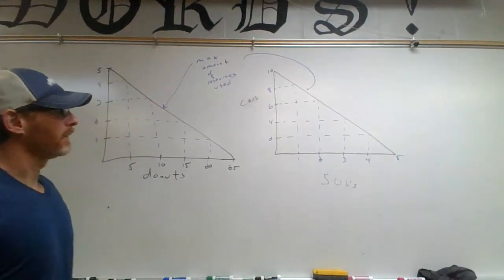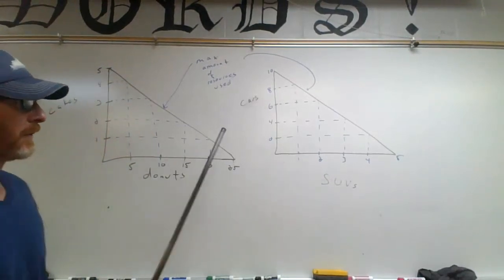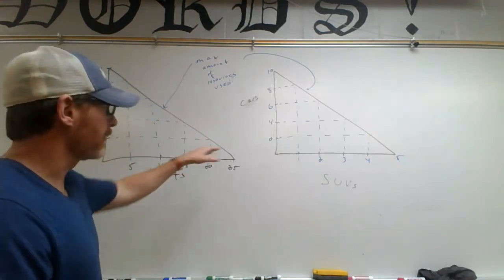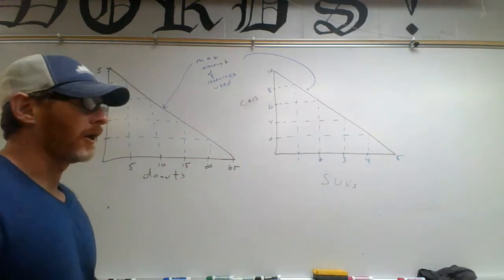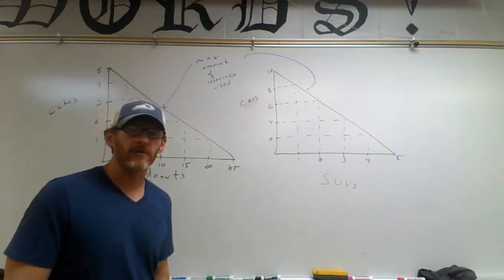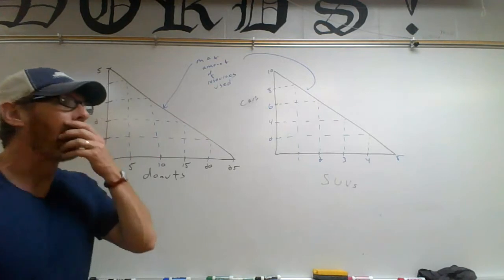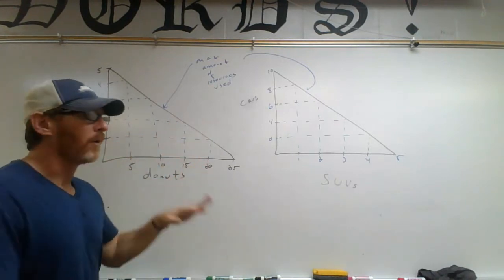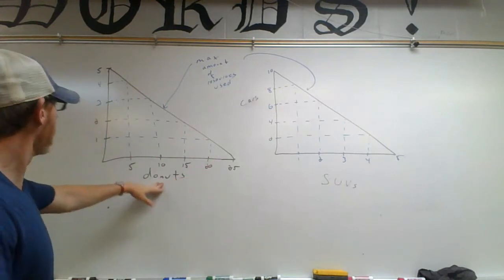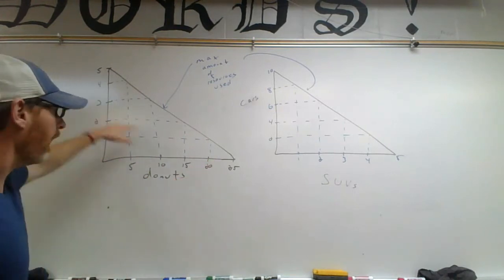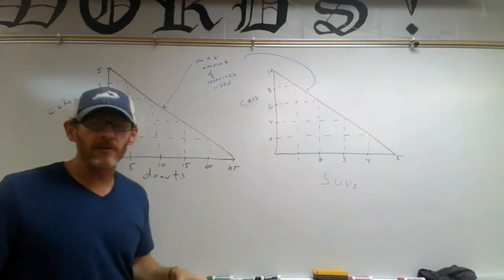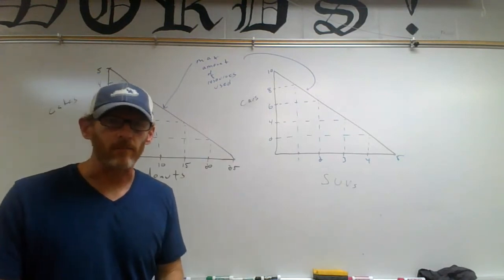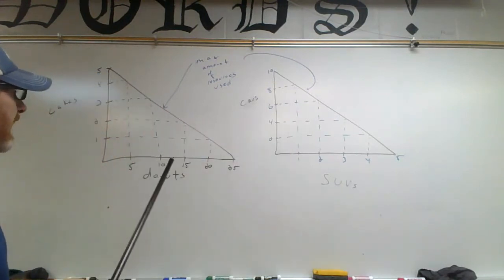We're looking at opportunity cost as a way to measure behavior. We have two curves here called production possibilities curves. Let's say there is an economy where we're only able to produce two goods: donuts and cakes. That means all of the resources we have are going into making donuts or cakes.